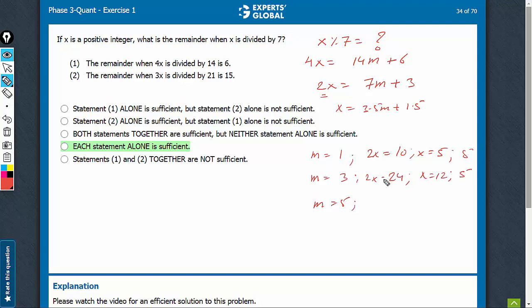For 5, 2x is equal to 35 plus 3, 38. x is 19. 19 with 7, the remainder is again 5. Take a big value, say m is equal to 11. 7 into 11 plus 3, 80. 2x is equal to 80, x is equal to 40, and 40 with 7, the remainder is 5 again. So see, every time you're getting 5, statement 1 is very much sufficient.